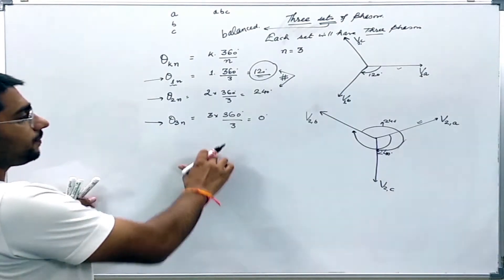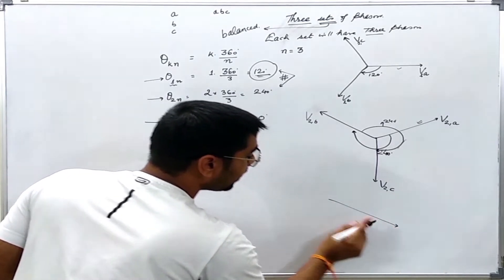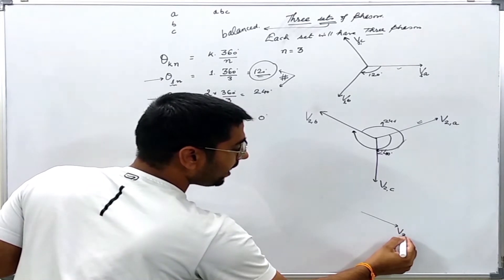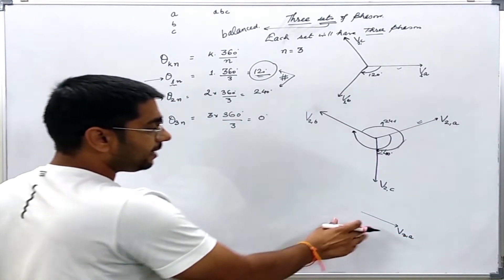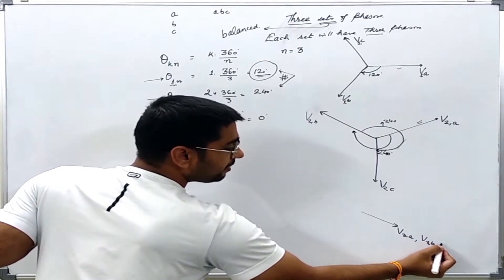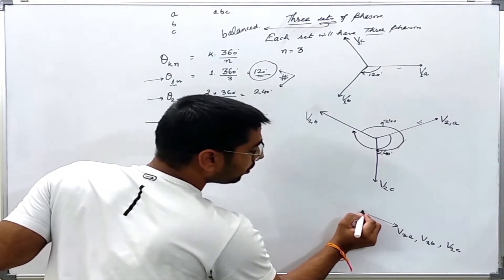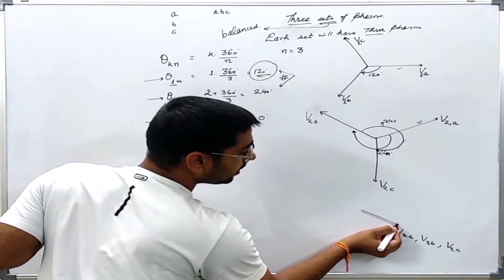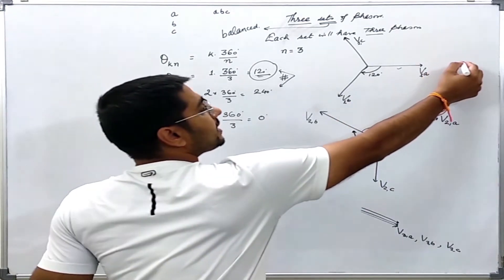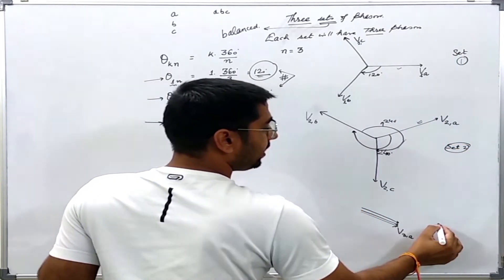Now for the third set, we will consider a different direction. Let us say this represents phase A for the third set. The second phase will be in the same direction and having the same magnitude, so it will also represent phase B of the third set. Similarly, it will also represent phase C of the third set. So I can show three phasors of the same length and same magnitude. In this way I have drawn all three sets: set 1, set 2, and set 3.